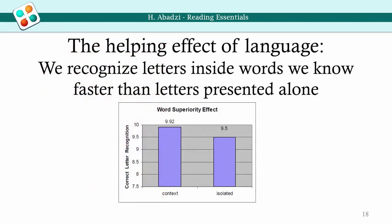People recognize letters presented briefly within words faster than they recognize isolated letters and letters presented within non-words. This is a sign of automaticity. To obtain this effect, students ought to know the language they are reading. However, the effect is rather modest — knowing words helps predict how they will end, but automaticity in recognizing letter combinations seems more important.